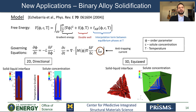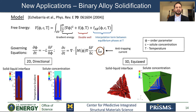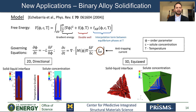Moving on to our most recent application, which simulates the solidification of binary alloys. This application is based on the solidification model of Echevarria and collaborators, which introduces an anti-trapping term to correct for spurious effects that arise from using an artificially large interface width — considerably larger than the physical width of a typical solid-liquid interface. The free energy contains a gradient energy term, a double-well term, and a third term FAB, which accounts for the concentration and temperature-dependent correction of the double-well according to the phase diagram. We show two snapshots of simulation results: one for directional solidification in 2D and one for equiaxed solidification in 3D.